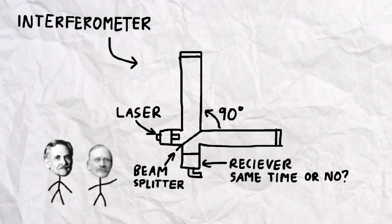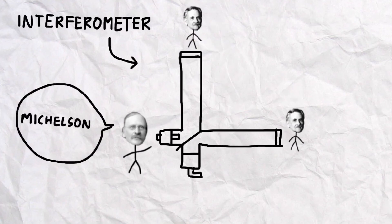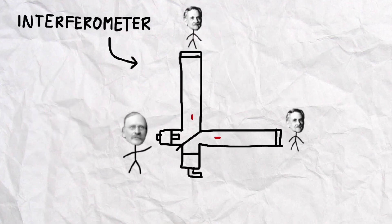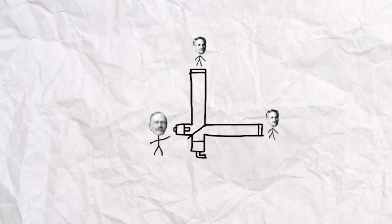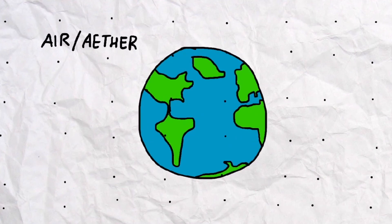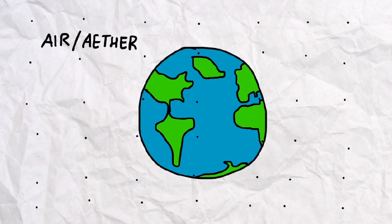In the context of the biking analogy, the laser beams correspond to Morley's sound waves, while the end of each arm corresponds to Michelson. Recall that the interferometer moves through the ether as the Earth orbits the sun, so it is essentially as if Michelson and Morley are biking through the air — except that instead of air, it is the mysterious ether.